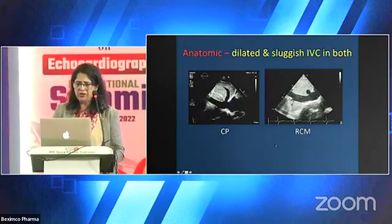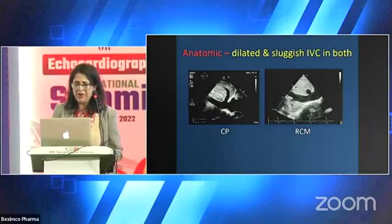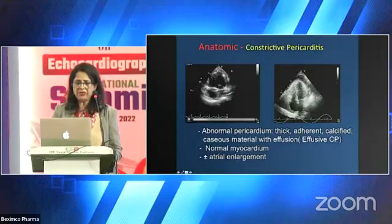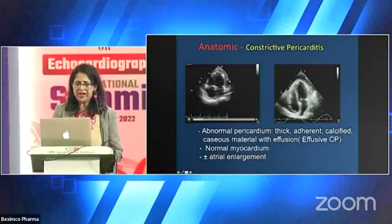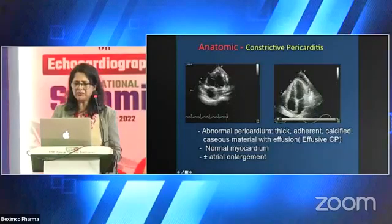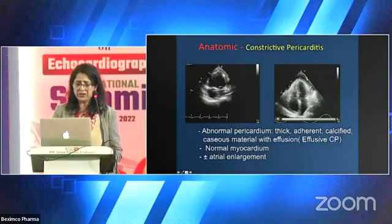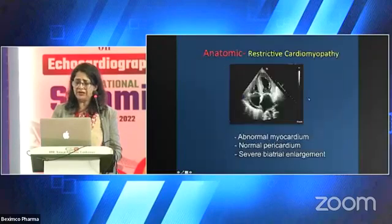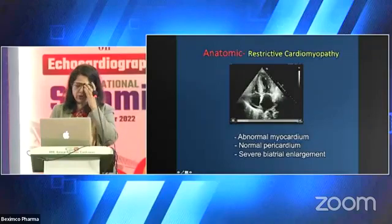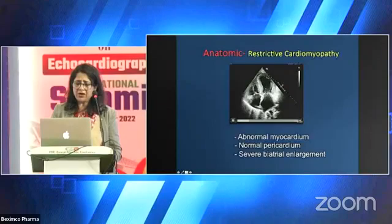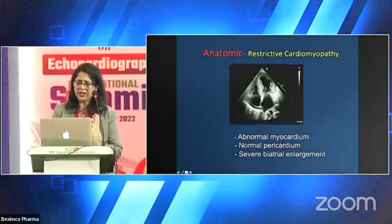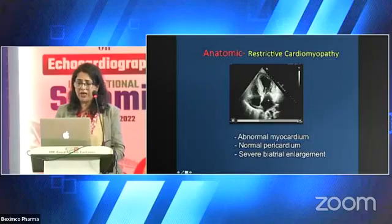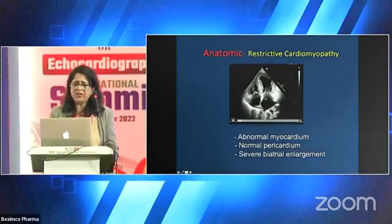The sluggish IVC is similar in both — we cannot differentiate on that. But in the four-chamber view, in constriction we get a thick pericardium — adherent calcified pericardium. In some cases we can see caseous material with effusion, called effusive constrictive pericarditis, but the myocardium is typically normal. In restrictive cardiomyopathy, such as amyloidosis, an infiltrative disorder, you get thickened myocardium — septum and lateral walls all thickened — with normal pericardium and severe biatrial enlargement.